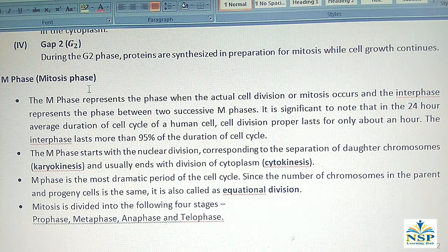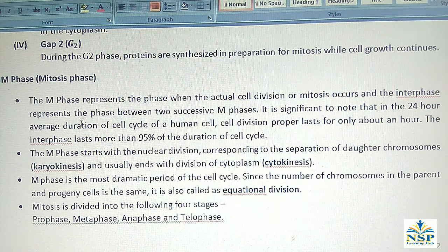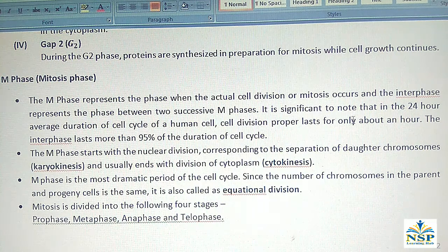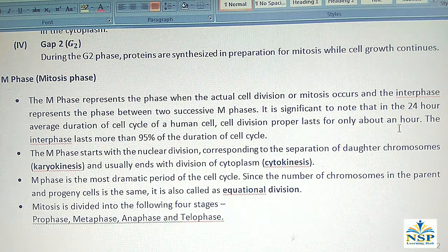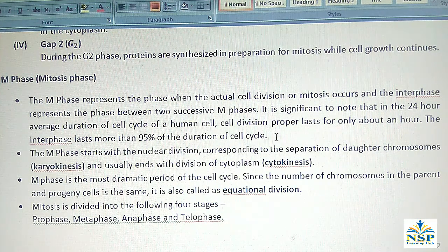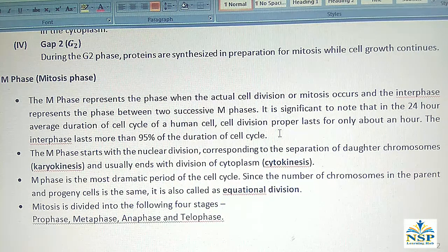M phase represents the phase when the actual cell division or mitosis occurs, and interphase represents the phase between two successive M phases. In the 24-hour average duration of the cell cycle of a human cell, cell division proper lasts for only about one hour. Interphase lasts more than 95% of the duration of the cell cycle — meaning 95% is interphase and only 5% is M phase in human cells.